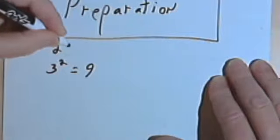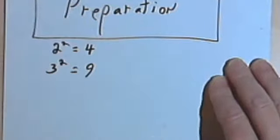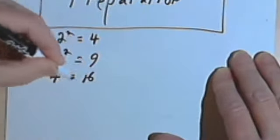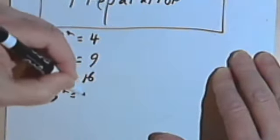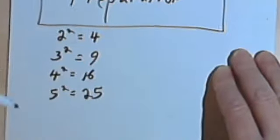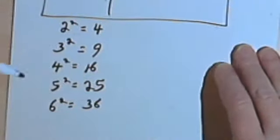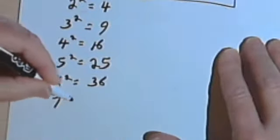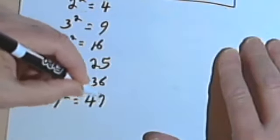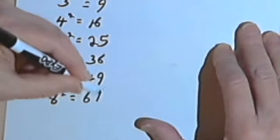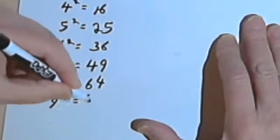So you're going to have 2 squared, and that's going to be a 4. 4 squared is 16. 5 squared is 25. 6 squared is 36. 7 squared is 49. 8 squared is 64. And we have 9 squared is 81.